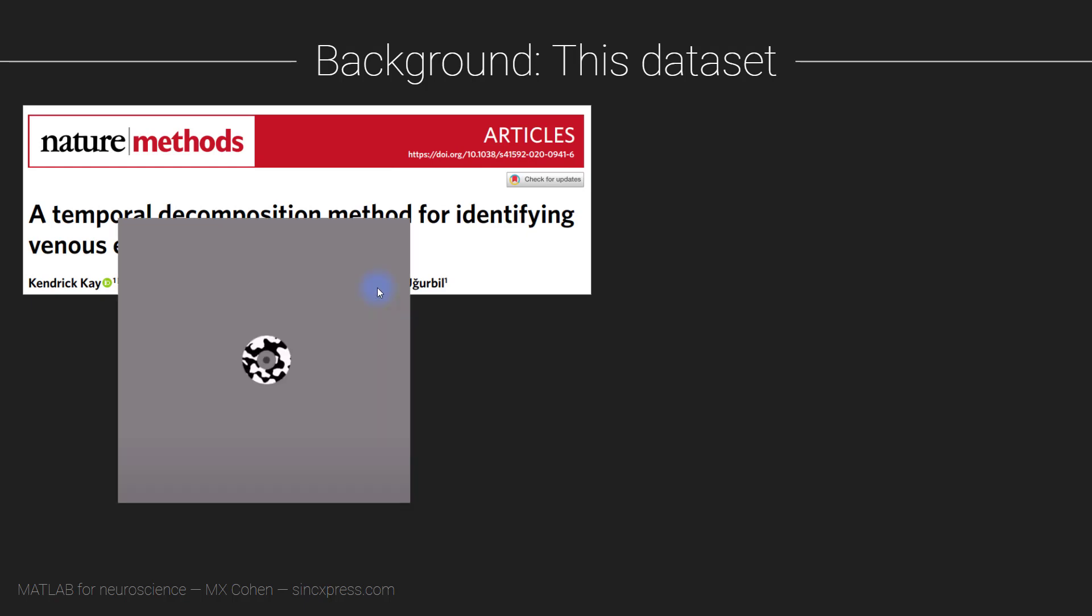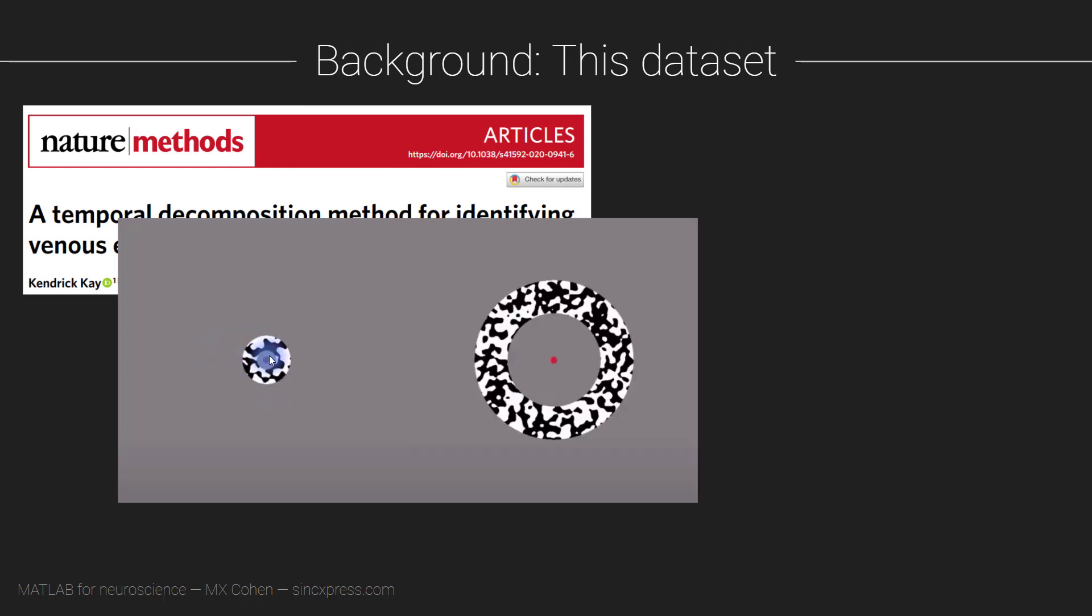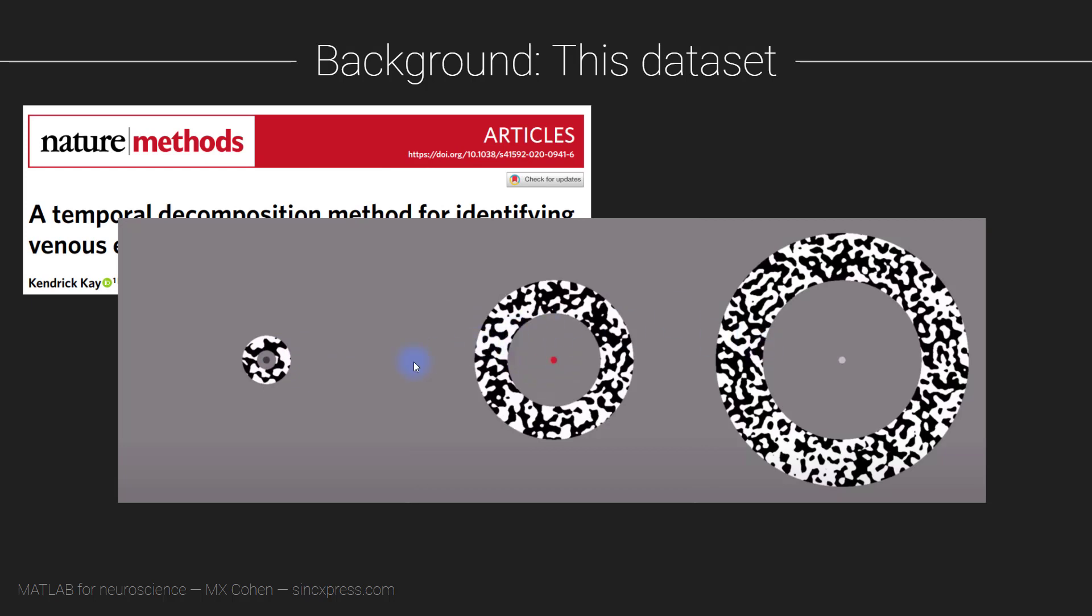The experiment was really simple. The research participants viewed a set of rings that had this kind of zebra-like animated pattern on top of them and there were different eccentricities. So here you see three examples of the stimuli.